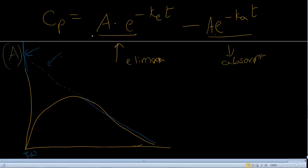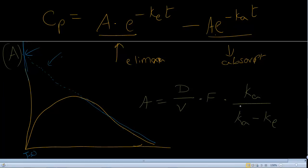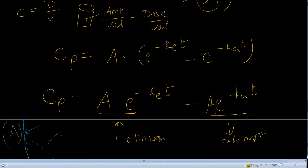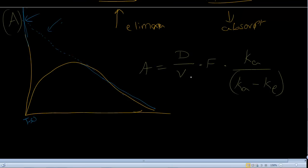The intercept is nothing but A. What is A? A is equal to dose divided by volume, times F, times ka, over (ka minus ke). So the extrapolated intercept gives us information about A. Go through the equation and ask yourself what is the role of each part, and you will understand why the extrapolated intercept gives us A.